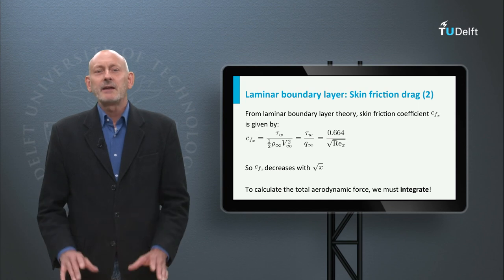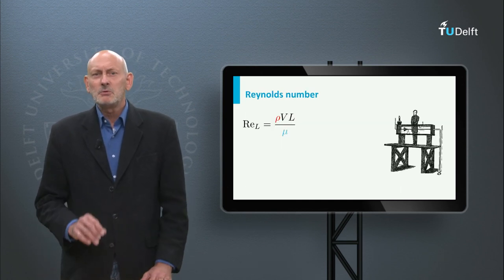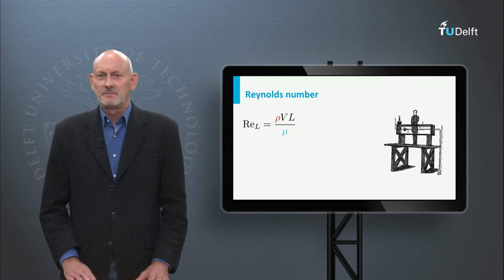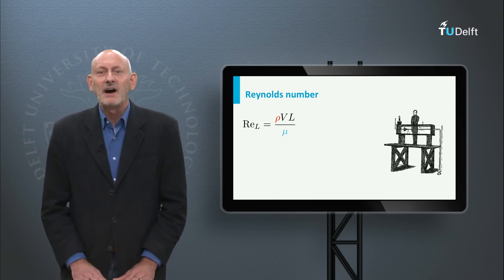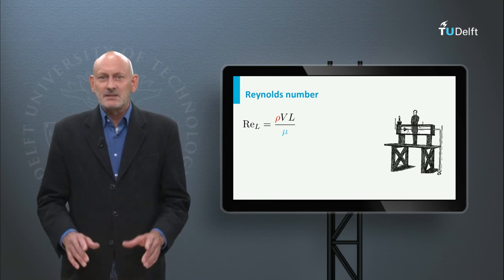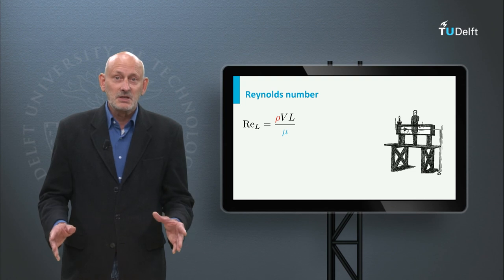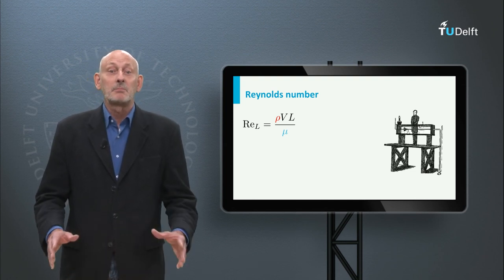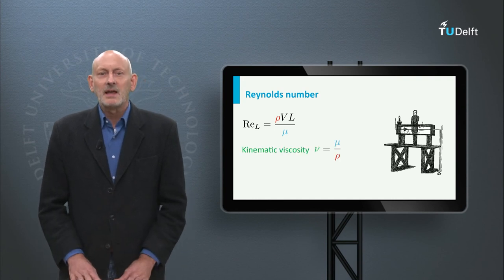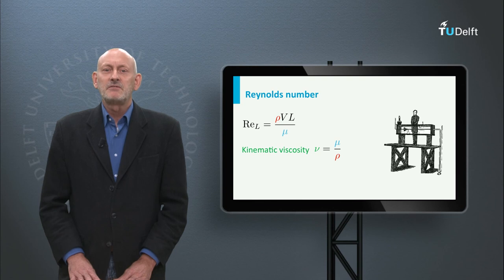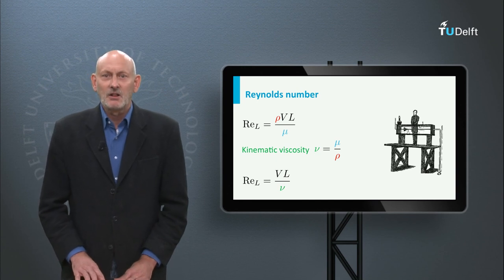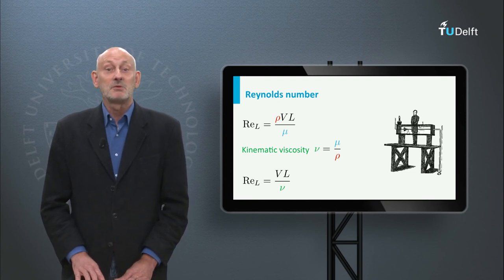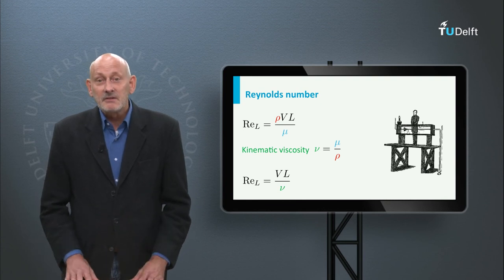To calculate the entire aerodynamic force, we must integrate. But first, let us have another look at the Reynolds number. The Reynolds number based on a length L was defined as rho times V times L divided by mu. The density and the dynamic viscosity are both defined by the same quantities of the fluid, for instance temperature and pressure. So we can define the kinematic viscosity nu as the viscosity mu over the density rho. Then we can simplify the Reynolds number to V times L over nu. At low Reynolds number we have viscous flow and the effect of friction in the flow is high. It decreases with increasing Reynolds number.